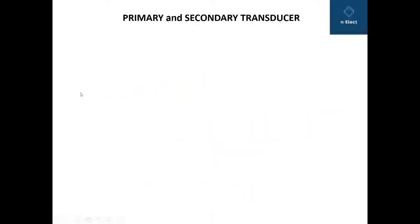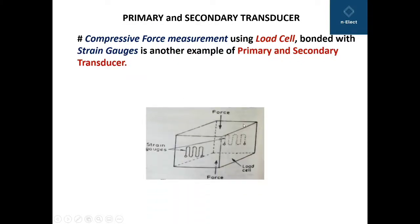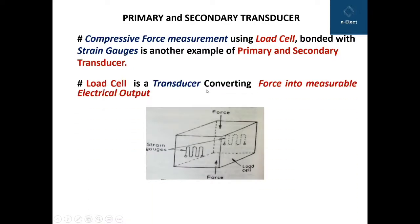As another example explaining the primary and secondary transducer concept, we will consider a compressive force measurement using a load cell. Consider this cubical-shaped structure you are seeing — this is the load cell upon which force is being applied on the vertically opposite faces, and on the horizontally opposite faces the strain gauges are bonded. Load cell is a transducer converting force into measurable electrical output.